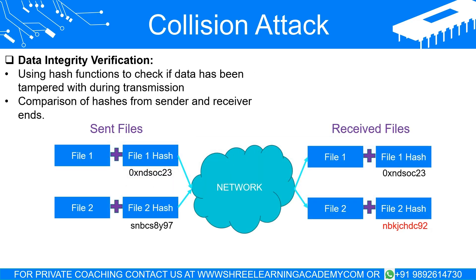Verifying data integrity. Hash functions are widely used to verify the integrity of data. When data is sent from one location to another, it's possible that it might get corrupted or tampered with along the way. By using a hash function, the sender can create a hash of the original data and send it along with the data itself. Upon receiving the data, the recipient can hash the received data and compare it with the received hash value. If both hashes match, then it's highly likely that the data is intact and has not been tampered with. For instance, when you download software from the internet, the provider often gives a hash value for the download file. You can generate a hash for the downloaded file on your computer and compare it with the provider's hash. If they match, you can be confident that the file has not been tampered with during the download process.